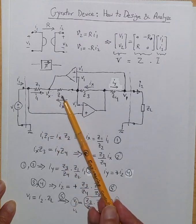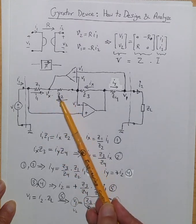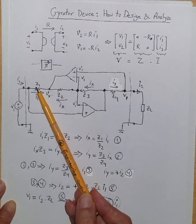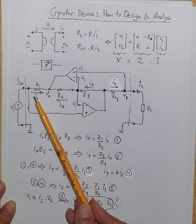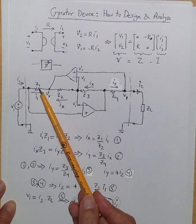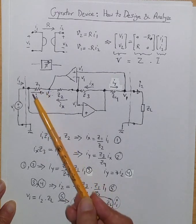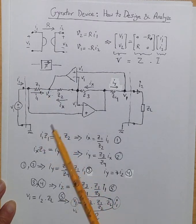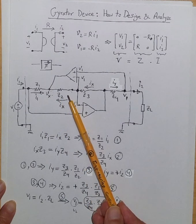So the voltage drop across Z2 should be equal to the voltage drop across Z1. So from that we can say Z1 times I1, that is the voltage drop across this guy, is equal to Z2 times Ix.